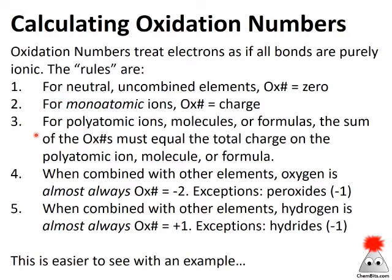Rule number three is where things diverge a little bit. For polyatomic ions, molecules, or formulas, the sum of the oxidation numbers must equal the total charge on the polyatomic ion, molecule, or formula. For polyatomics of any sort, charge is a characteristic of the entire assembly of atoms, whereas oxidation number looks at each individual atom in that grouping.